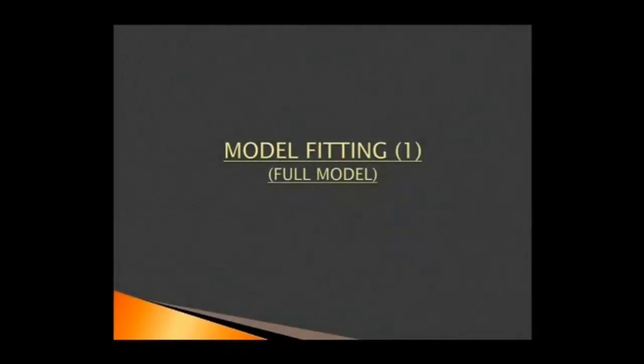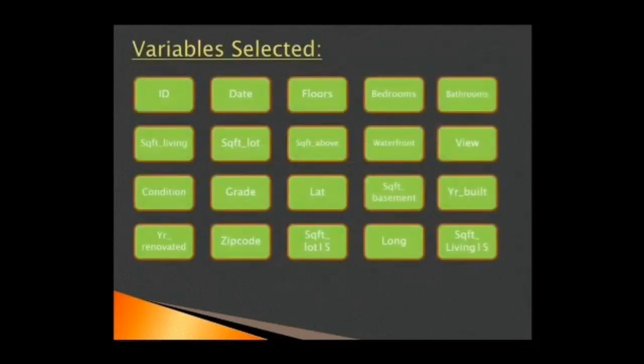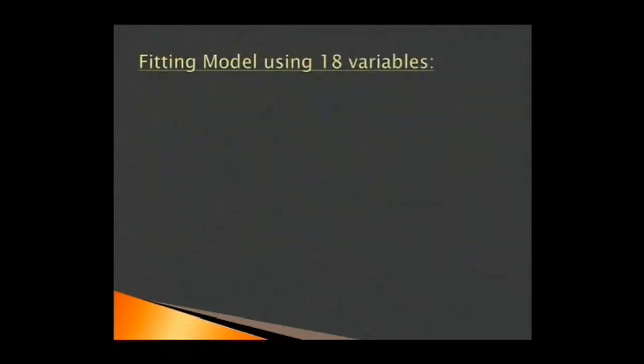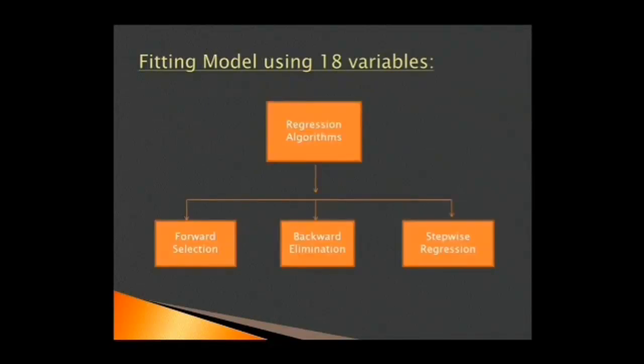Now, we fit multiple linear regression model for the first time, but before doing that, we will have to select variables. Now, on careful scrutiny, we come across these two variables ID and date to be irrelevant to our study. So, we immediately drop them. Hence, we will be fitting model using 18 variables. We work with three algorithms of regression: forward selection, backward elimination, and stepwise regression to obtain the best model. On doing so, we get the following result.